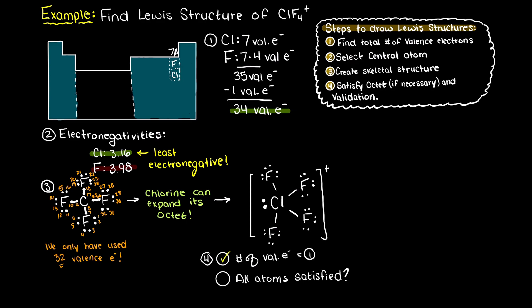Both of our conditions of validation are now met as we are using all of our 34 valence electrons and all of the fluorine atoms are satisfied in terms of the octet rule, and as we said, chlorine is now using an expanded octet.